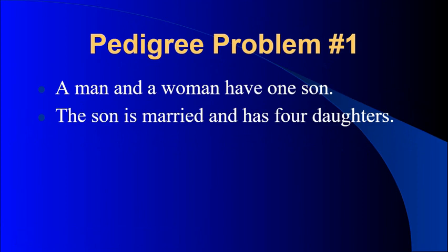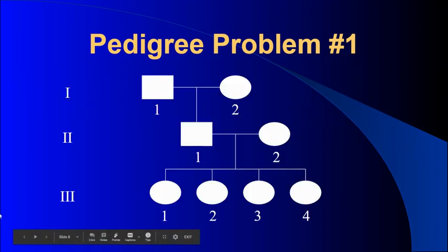For an example problem: a man and a woman have one son. The son is married and has four daughters. For that pedigree, it would look like this — we have the man and the woman in generation one who have had a son, and that son is married in generation two. They have four children, which are all girls.